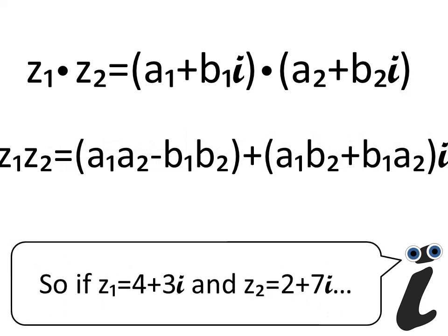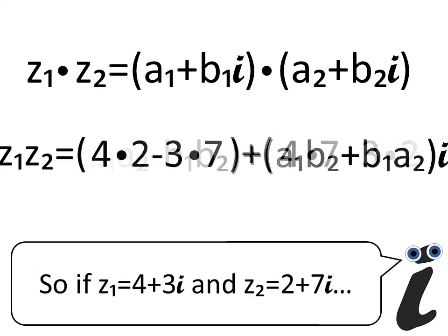So if z1 equals 4 plus 3i, and z2 equals 2 plus 7i...